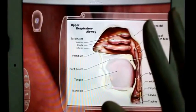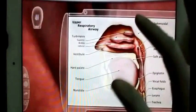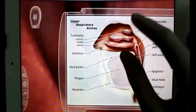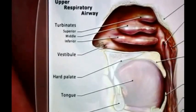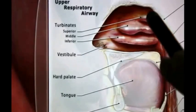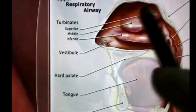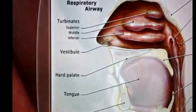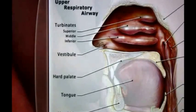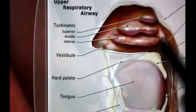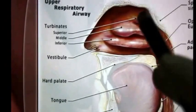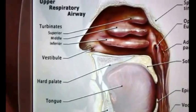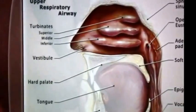Just to give you a quick introduction of upper respiratory anatomy. Here you can see turbinates — superior turbinate, middle turbinate, and inferior turbinate. These are covered with mucous membrane. This is a lateral view of the nasal cavity, and you can see the folds of mucous membrane.